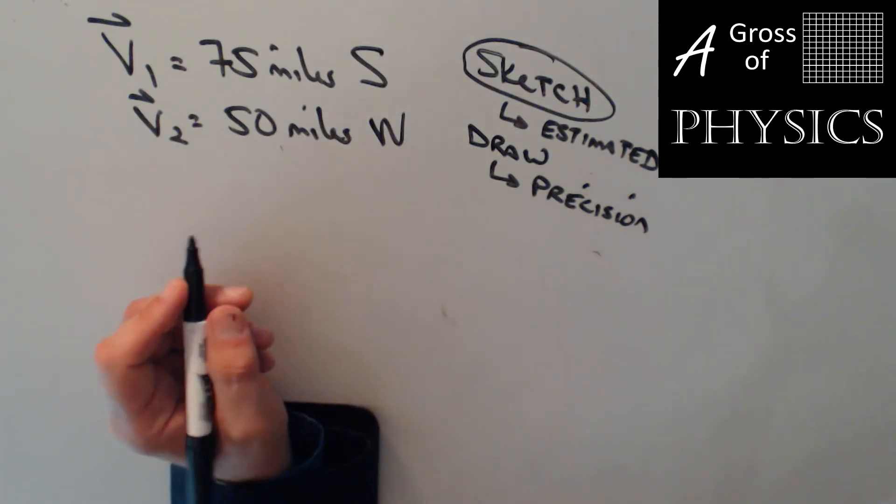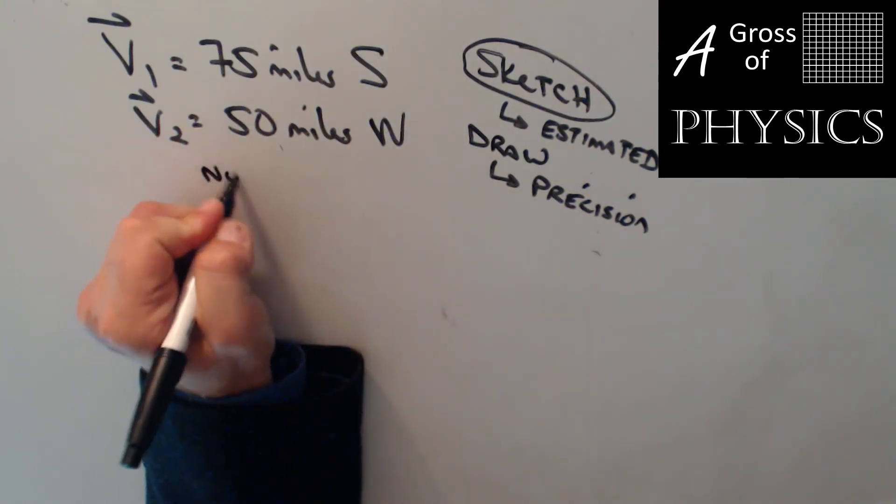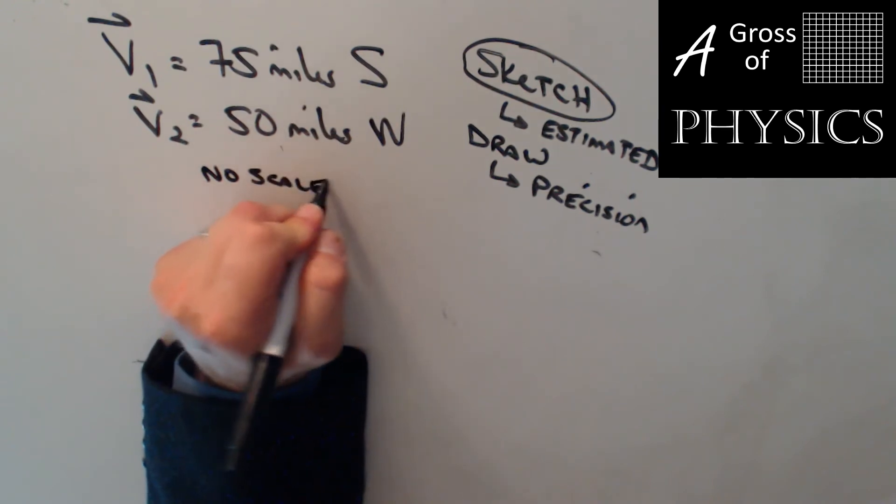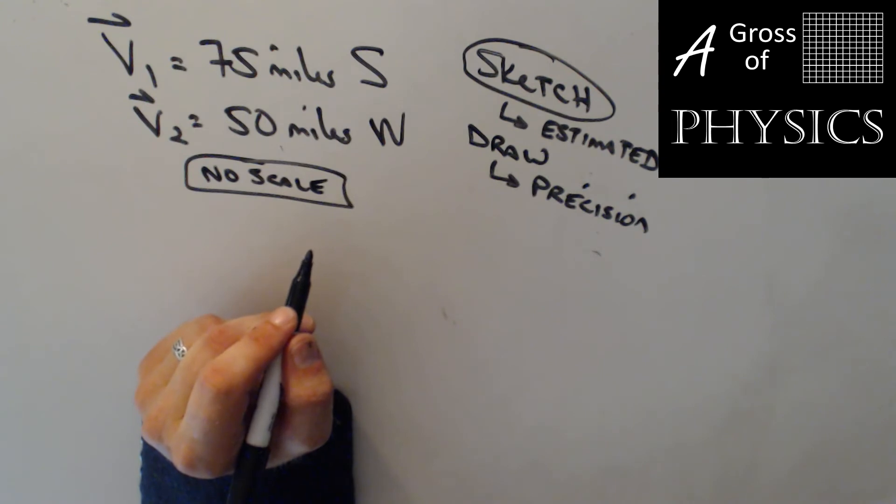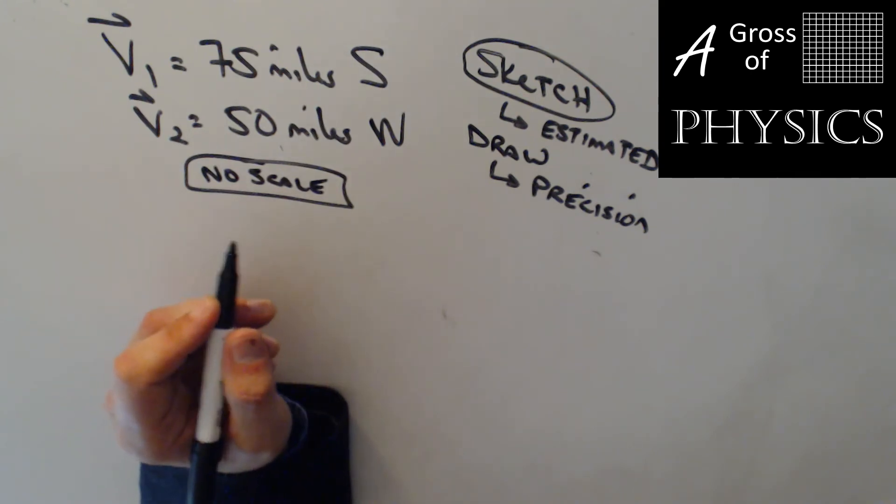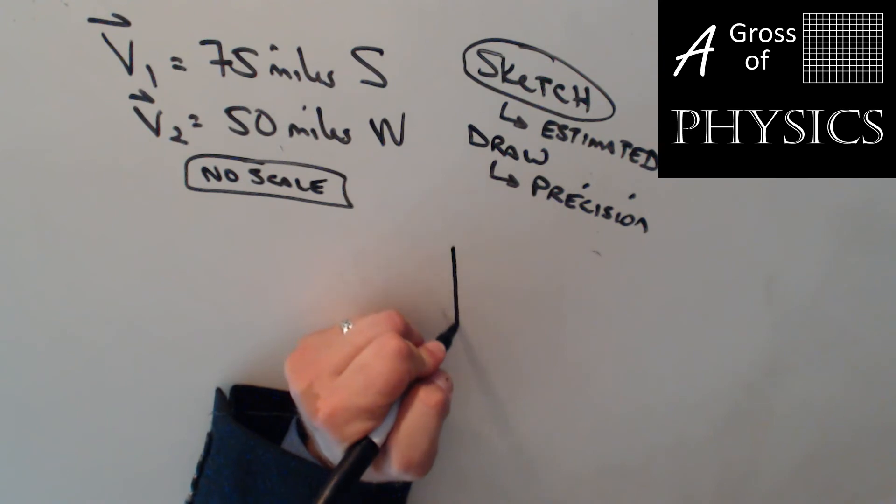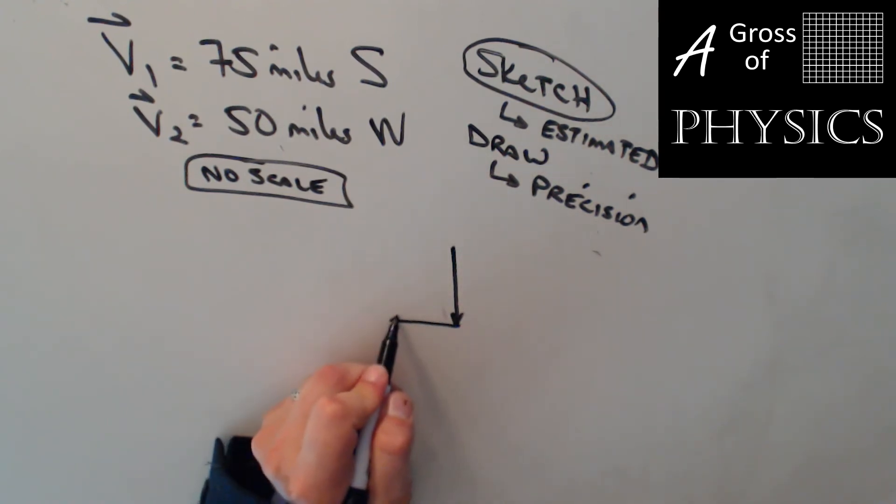Now, if we look at V1 and V2, we don't need a scale. No scale needed. So we don't have to do one centimeter equals five miles or anything like that. All we're going to do is set up a chart. Now, when we have vectors that are perpendicular already, I think the easiest way to do it is just draw the two vectors. You still sketch them tip-to-tail, 75 and 50.